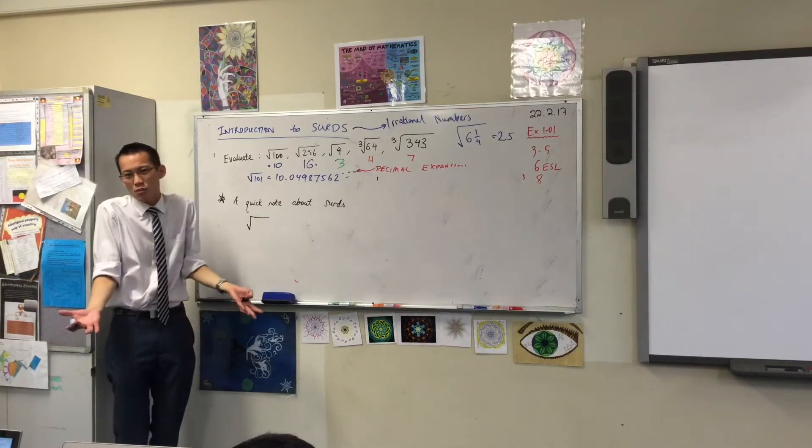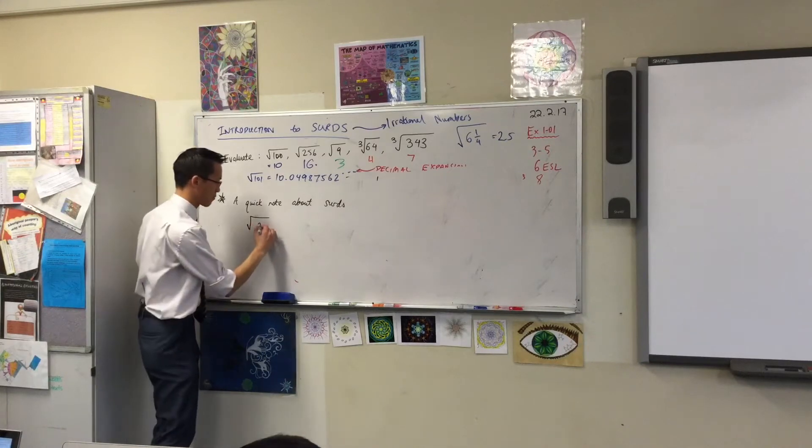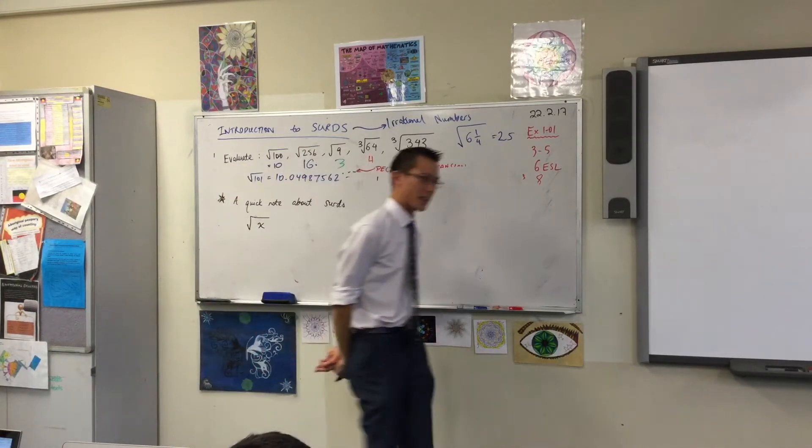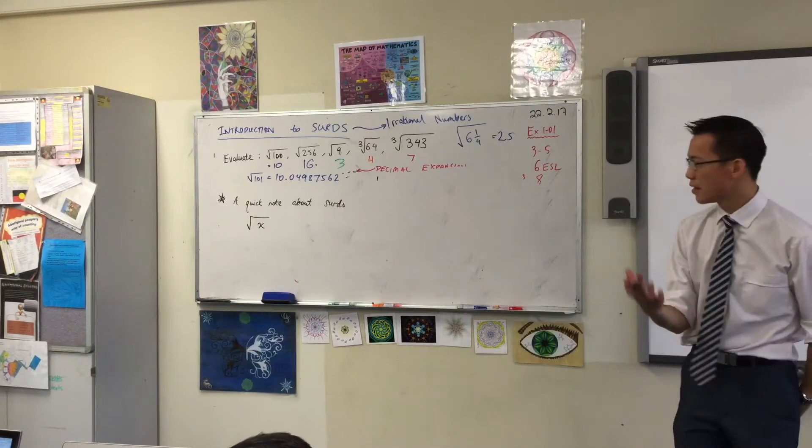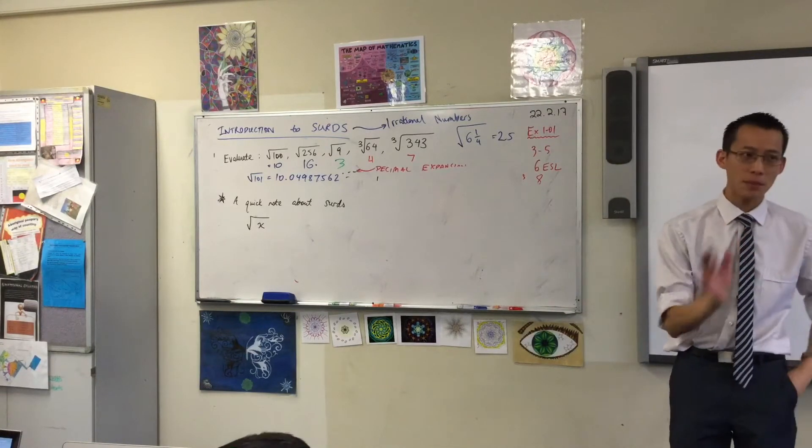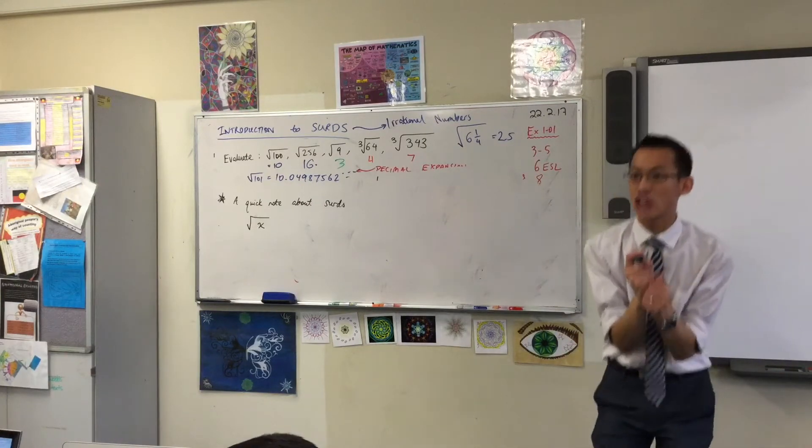So the square root of a number—let's just call the number, well in algebra when you don't know what a number is, what do you call it? Usually called X. The square root of X, we define that as a positive number.